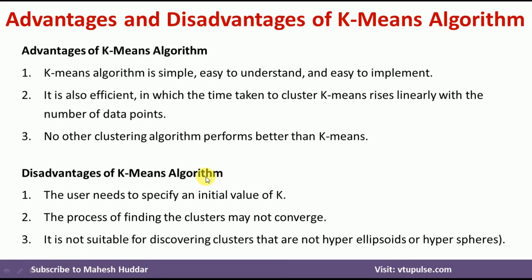The disadvantages of K-means are: first, the user needs to specify the initial value of K — that is, how many clusters are required — which is a very difficult question because it is hard to know how many clusters to form at the initial stage. One approach is to visualize the data points and then specify the value of K, but that still requires some judgment. Second, the process of finding clusters may not converge, which can happen when there is no similarity between the data points. Finally, K-means is not suitable for discovering clusters that are not hyper-ellipsoid or hyper-sphere shaped.